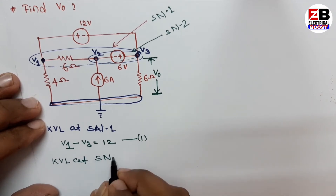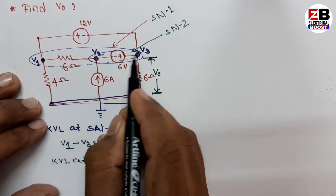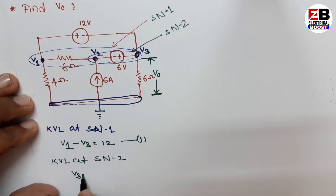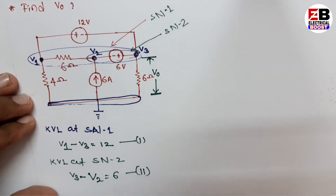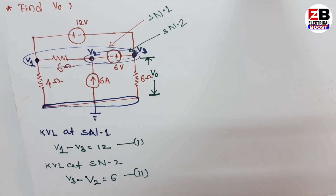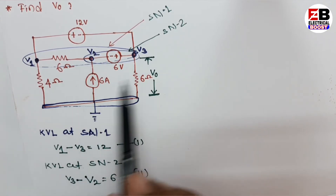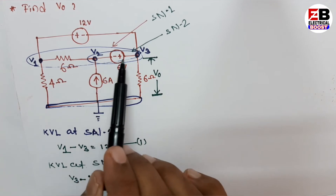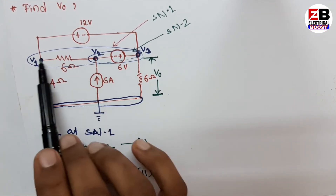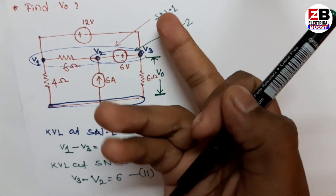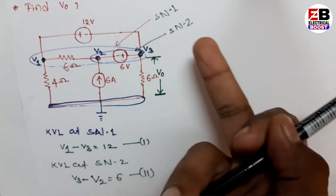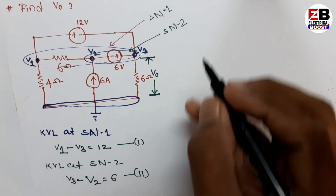Then applying KVL at Supernode 2, according to polarity: V3 minus V2 equals 6. This is our second equation. Note that Supernode 2 lies inside Supernode 1, so we consider the total outer boundary as a single KVL equation for Supernode 1, since the inner supernode already exists within it.